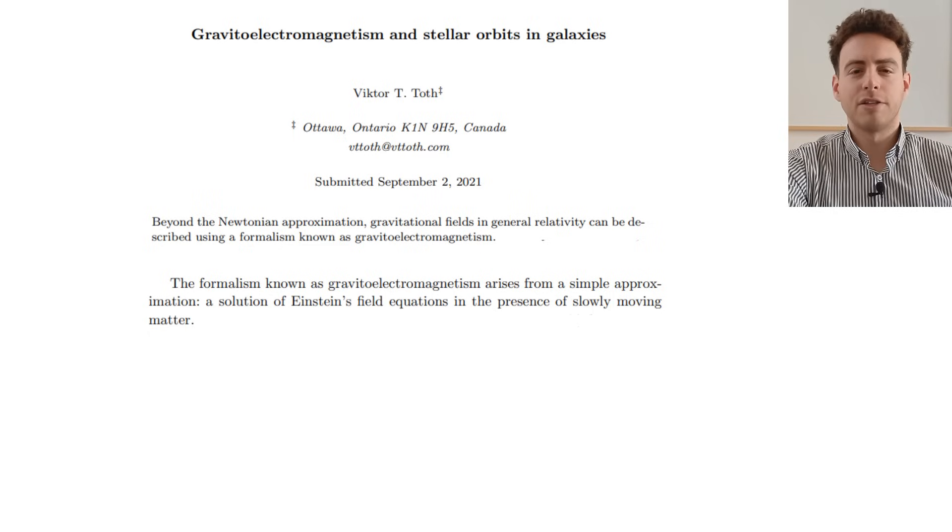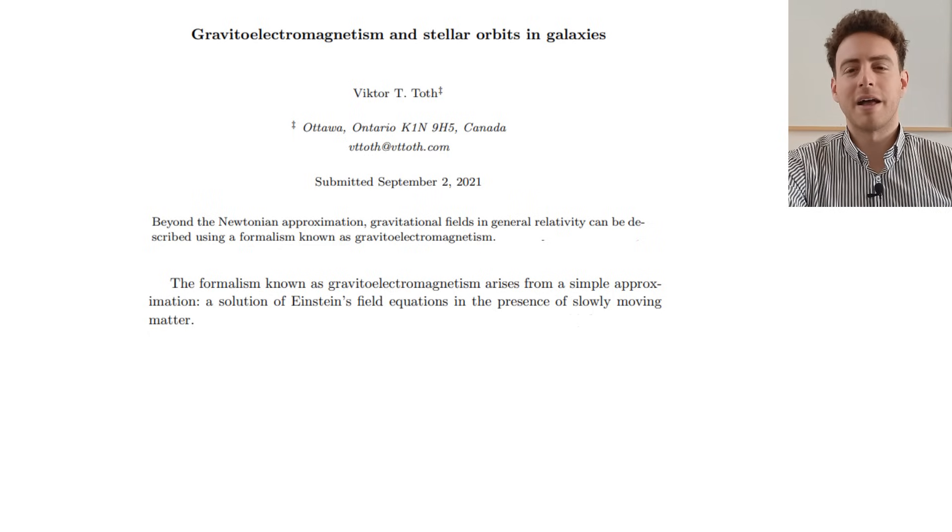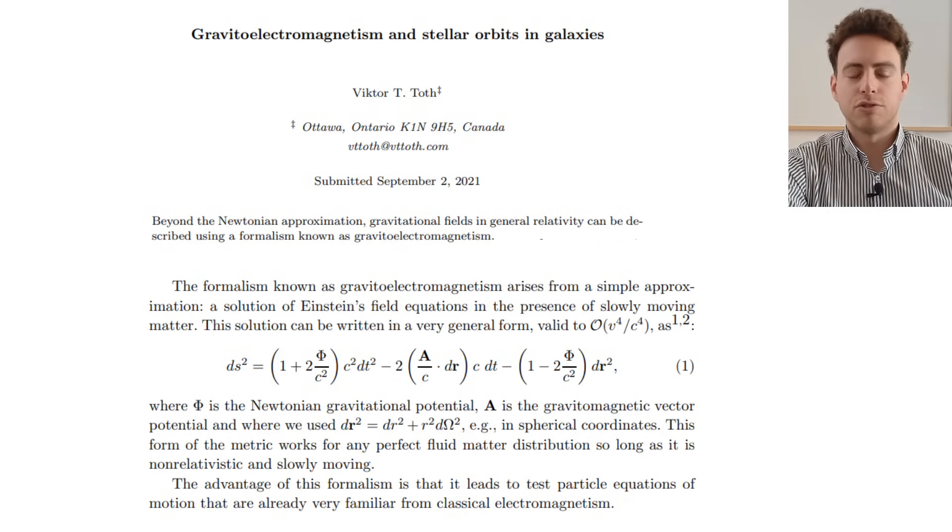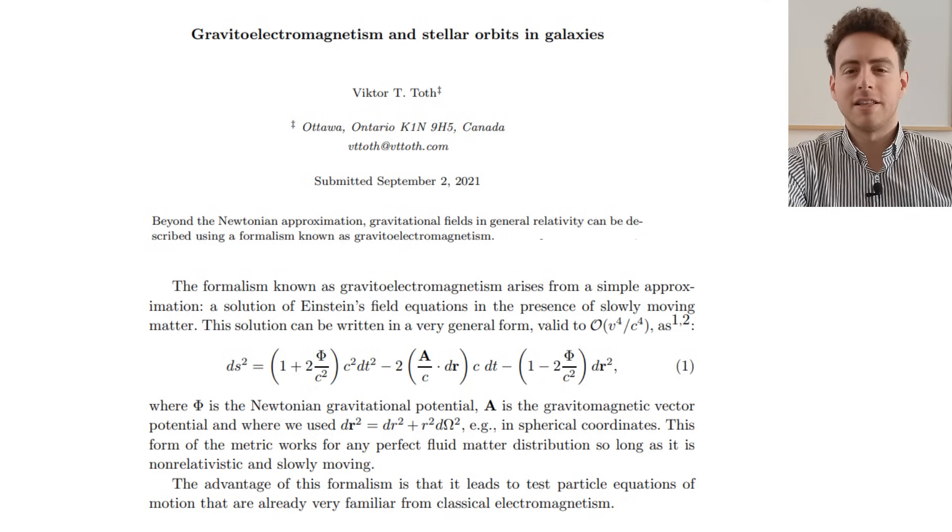The linear approximation to general relativity is given by gravito-electromagnetism, which is a second-order post-Newtonian effect. For slowly moving matter, we start with a metric solution similar to the Schwarzschild metric, in which Φ is the usual Newtonian gravitational potential, and A is the so-called gravitomagnetic vector potential.